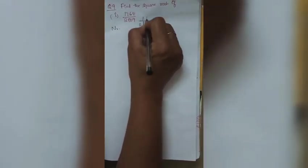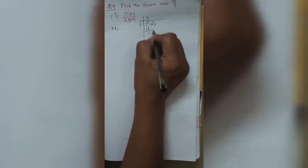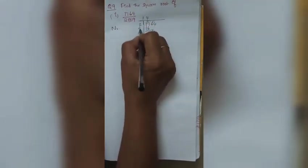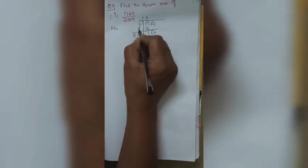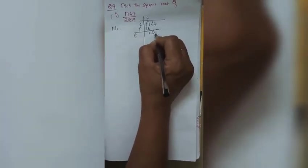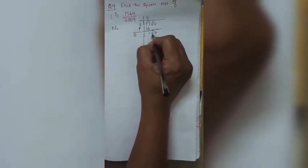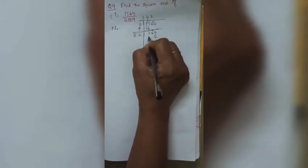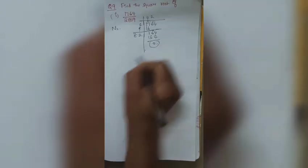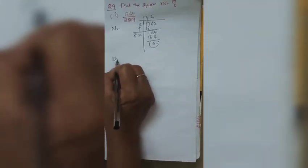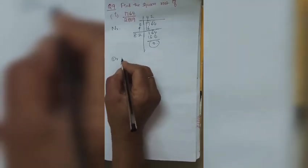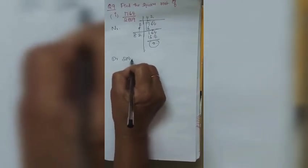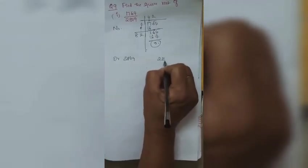For 1764: 4² = 16, subtract to get remainder, bring down 64. Add 4 to divisor: new divisor 8. 82×2 = 164, remainder 0. So √1764 = 42. For the denominator: √2809.